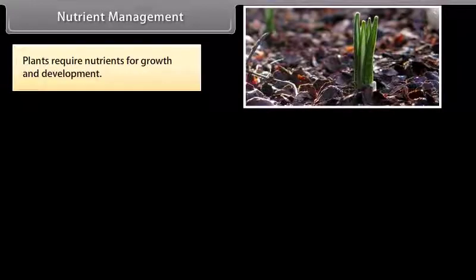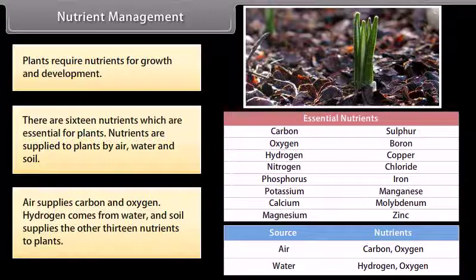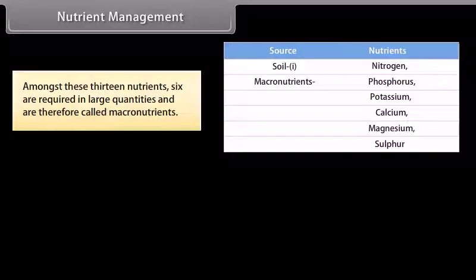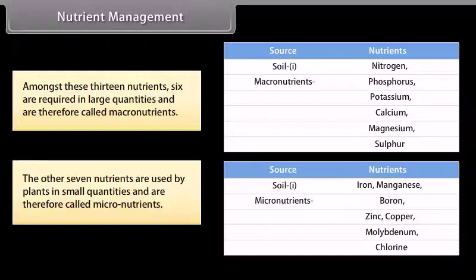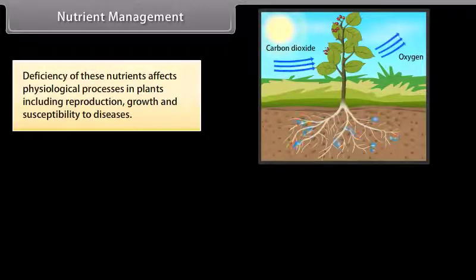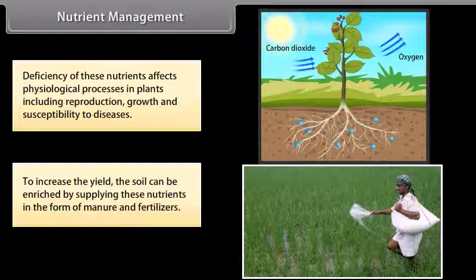Plants require 16 nutrients essential for growth and development. Nutrients are supplied by air, water and soil. Air supplies carbon and oxygen; hydrogen comes from water; and soil supplies the other 13 nutrients. Of these 13, six are required in large quantities and are called macronutrients, while the other seven are used in small quantities and are called micronutrients. Deficiency affects physiological processes including reproduction, growth and susceptibility to diseases. The soil can be enriched by supplying nutrients in the form of manure and fertilizers.